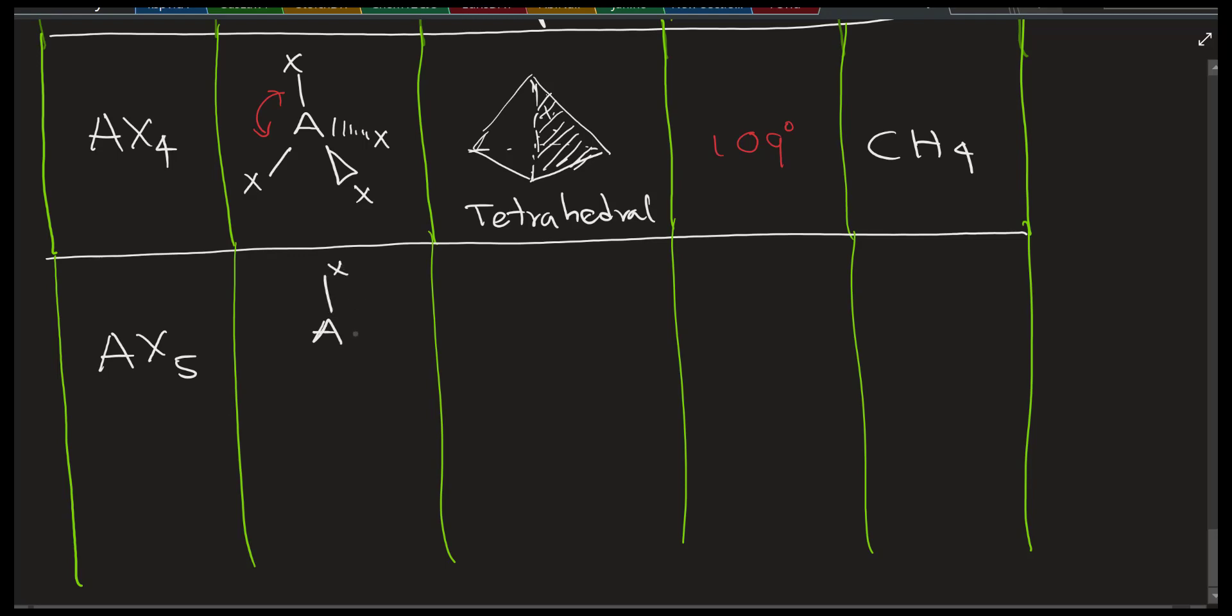AX5. So this one again, the central atom is A and X's are surrounded. But what's the specialty is the mid one. Mid part is a triangle. Can you see the flat triangle in the middle? And one sticks up, one sticks down. So that will give me the shape called the trigonal bipyramid. Bipyramid means two pyramids. One pyramid is actually sticking up from the triangle, and the other pyramid is sticking down from the triangle.